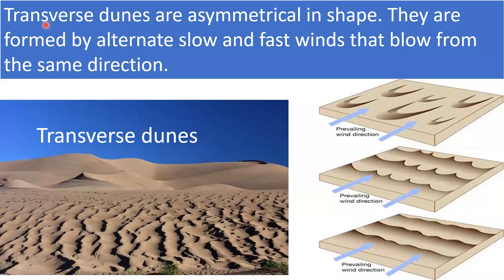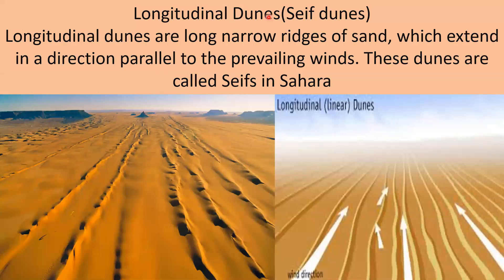Transverse dunes are asymmetrical in shape. They are formed by alternating slow and fast winds that blow from the same direction. Longitudinal dunes, also called seif dunes, are long narrow ridges of sand which extend parallel to the direction of the prevailing winds. These dunes are called seifs in the Sahara Desert.